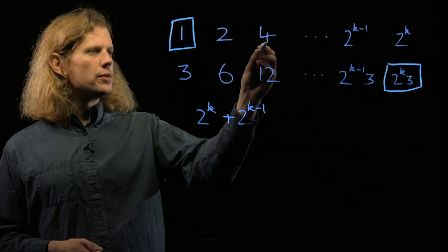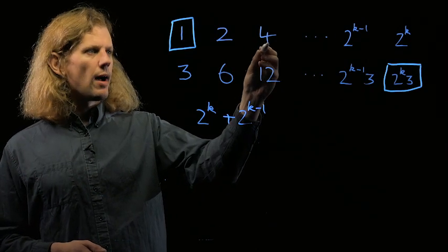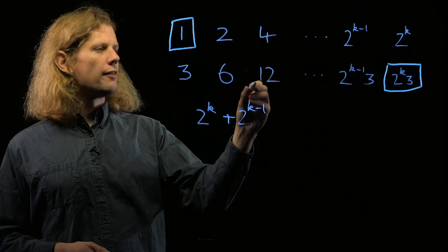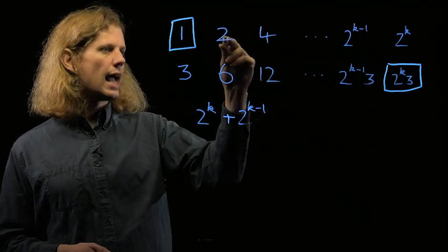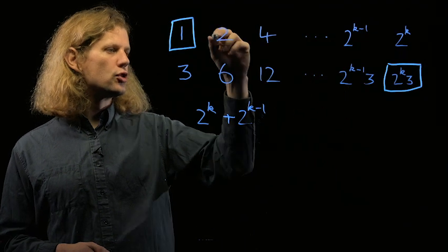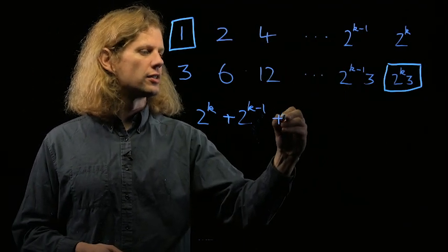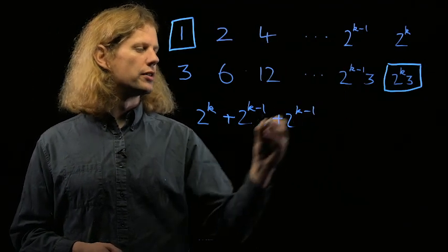If the last term in the top row we use is 4 again, then we now have a choice of 2, and we now have a choice of the bottom row starting from 12. So again, we've got k minus 1 different terms that we can choose or not choose, and that gives us another 2 to the k minus 1.